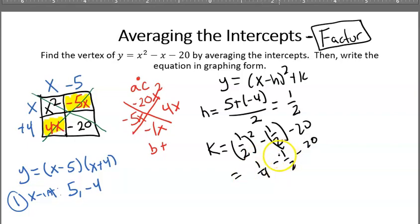So we got 1 fourth minus 1 half. 1 half is really 2 fourths. So 1 fourth minus 2 fourths is negative 1 half. So negative 1 half minus 20. Well, negative 20 is the same thing as negative 40 halves. So that's negative 41 halves.